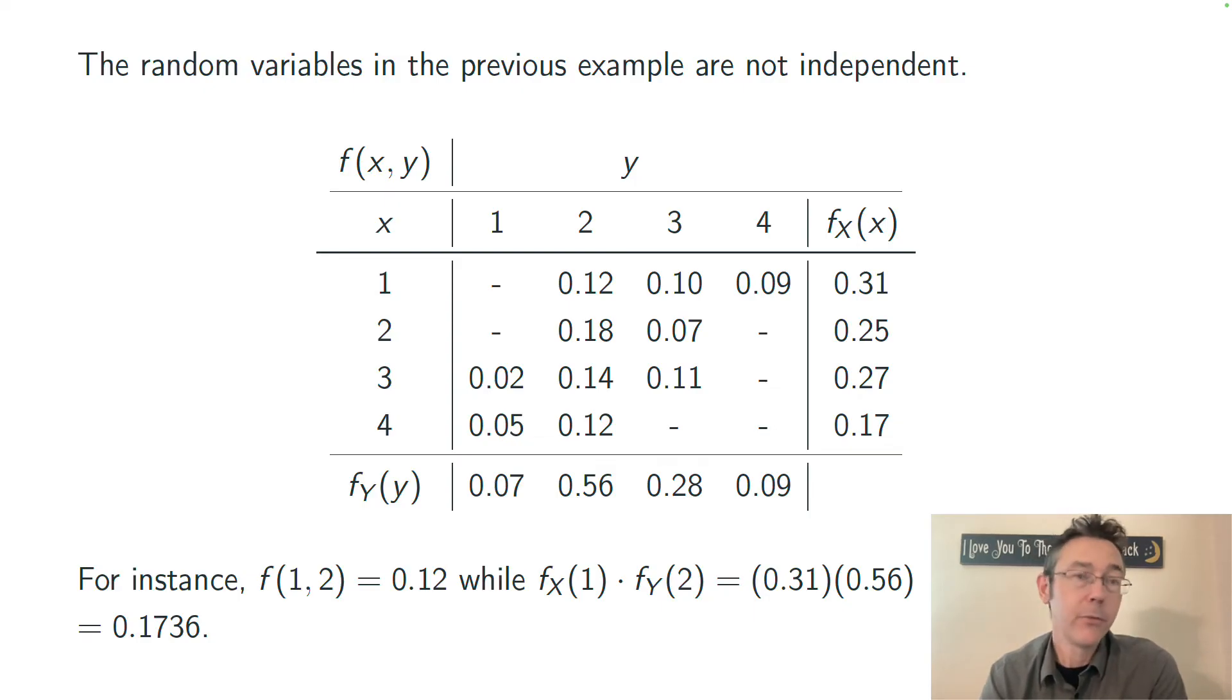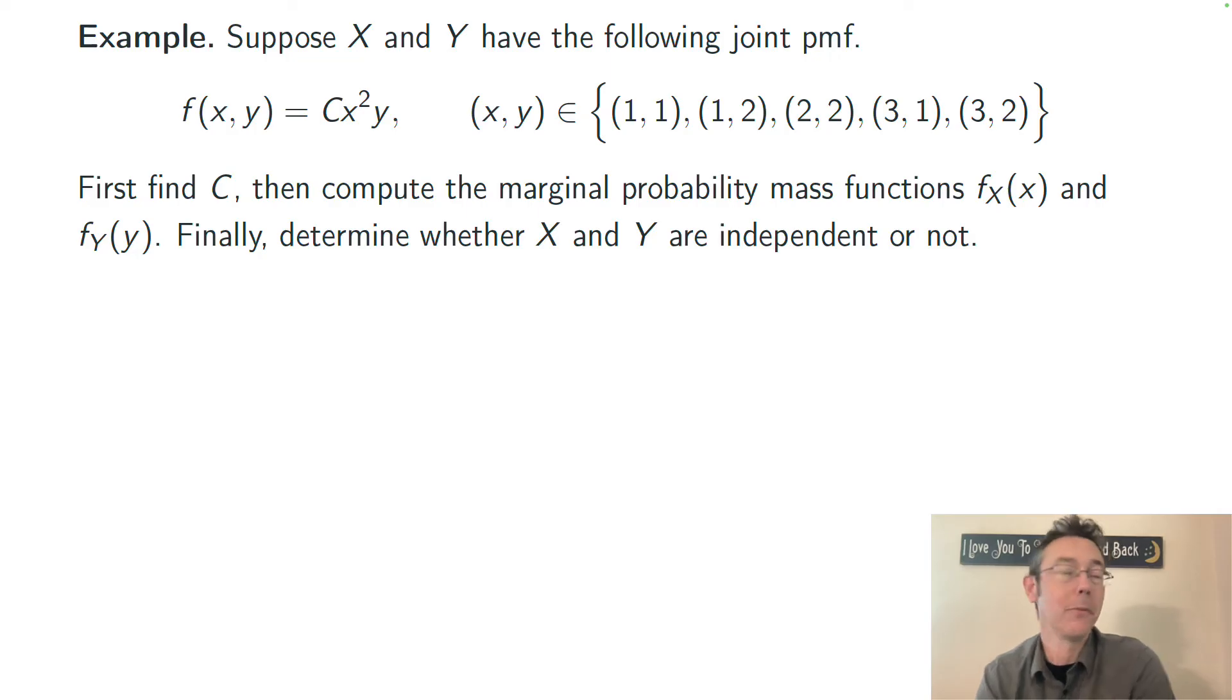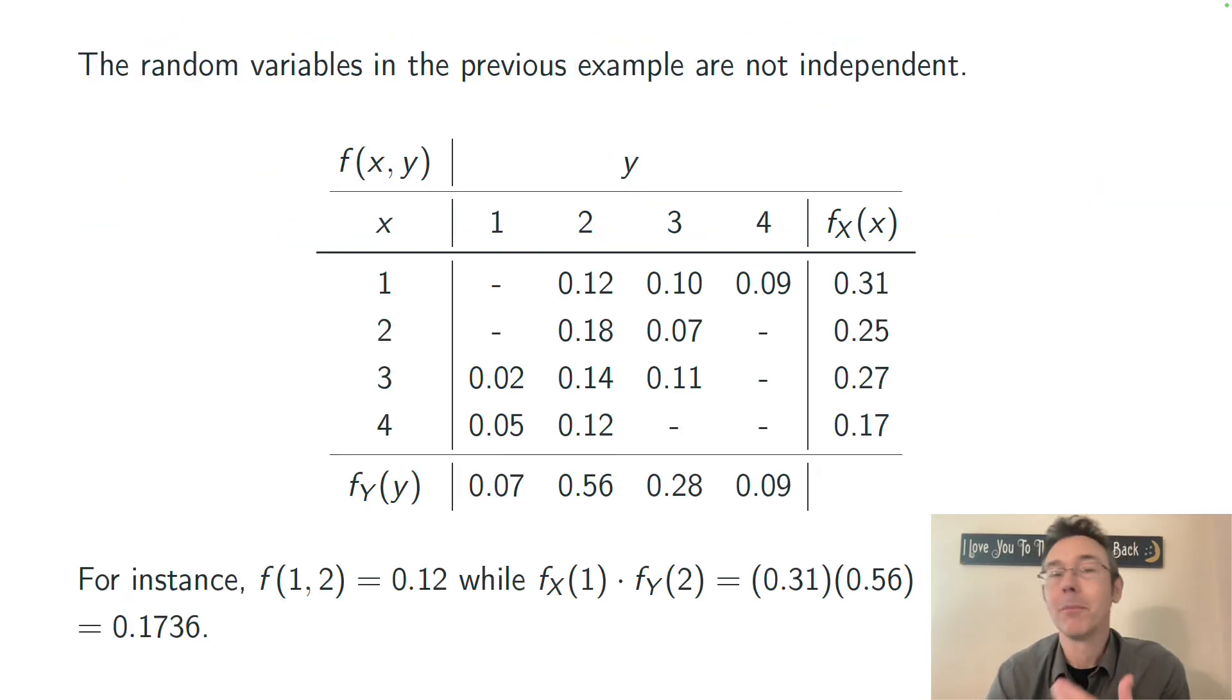On the other hand, if we take the corresponding marginal probability mass functions, that would be 0.31 for f_X and 0.56 for f_Y, and we multiply those, we get 0.17, and obviously that's not equal to 0.12. And therefore, these random variables are not independent. We say they're dependent.